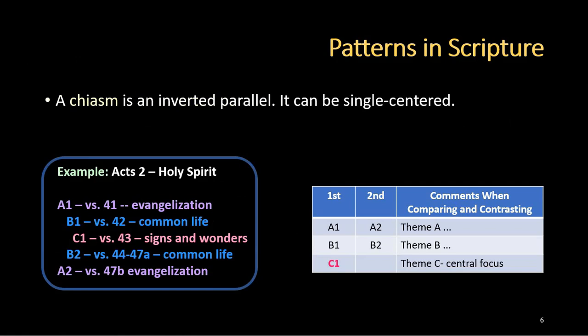A chiasm is an inverted parallel. It can be single-centered. An example of this would be Acts 2, which talks about the Holy Spirit. A1 begins with verse 41 — the theme there is evangelization. Next is B1, found in verse 42, where the theme is common life. Then we have C1, found in verse 43, where the themes are signs and wonders. And then we see a reversal taking place: B2 is verses 44 through 47a, talking about common life again, and A2 is verse 47b, which talks about evangelization again.